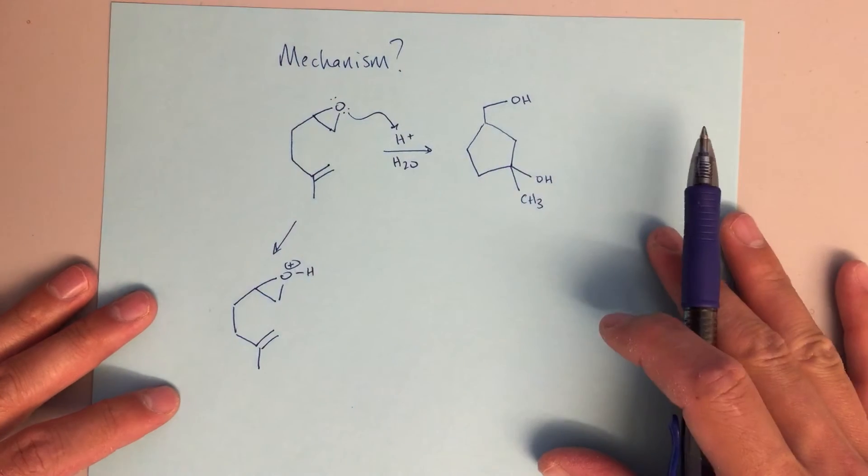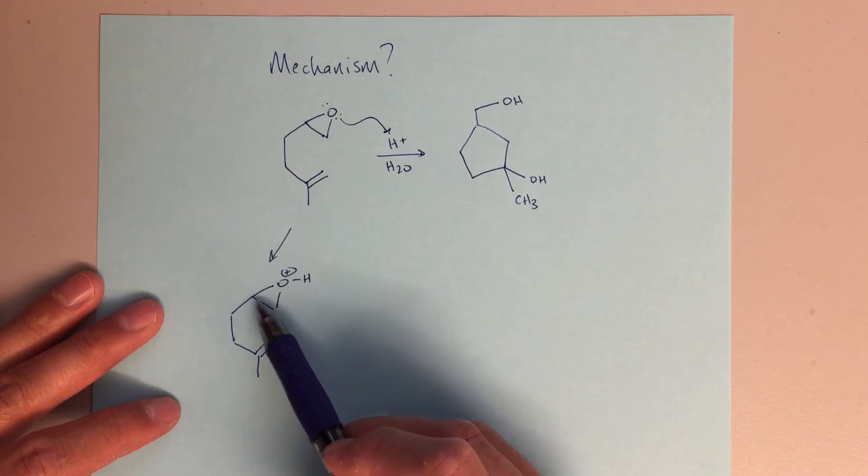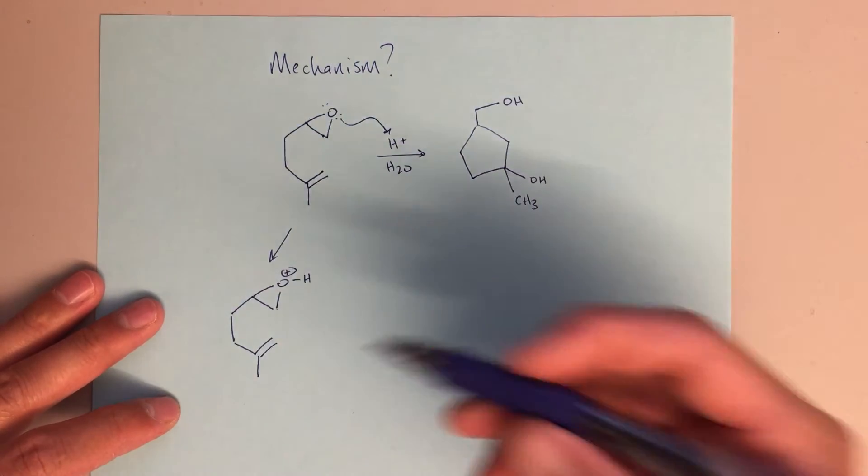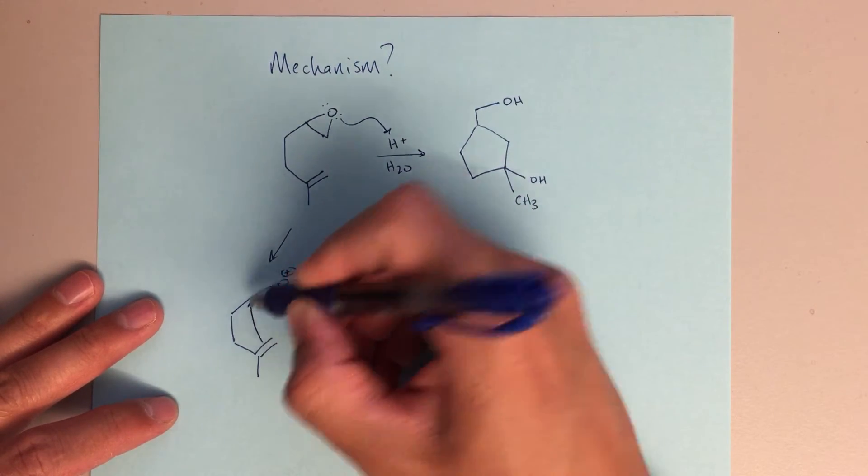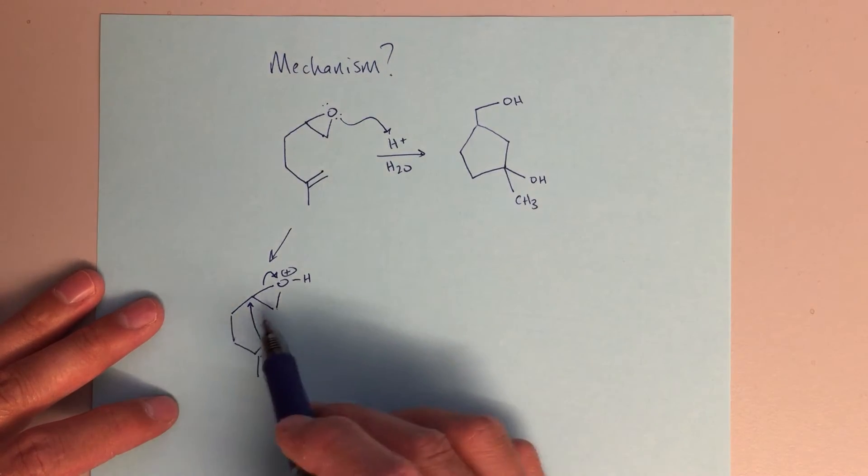But this is one of those cases where electronics is going to play a bigger role. So I've got a positive charge here on my oxygen, formal positive charge, and I'm going to have that positive charge distributed over these two carbons. Now this carbon, since it's more substituted, will bear more of that positive charge, and these electrons will have an easier job interacting with that more substituted carbon. The next step that I'm going to draw looks like this.